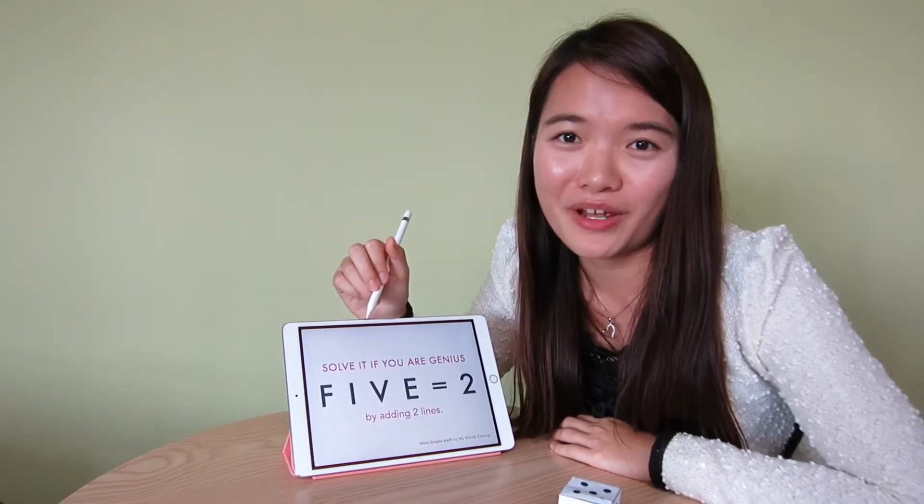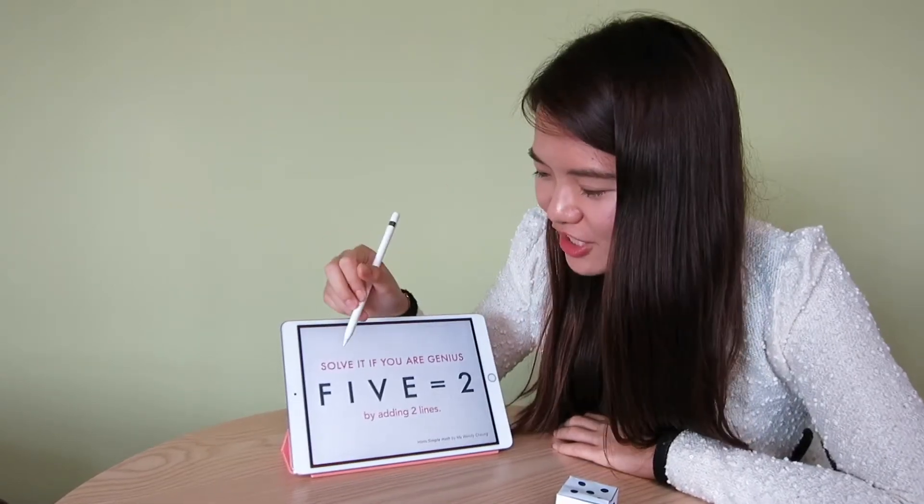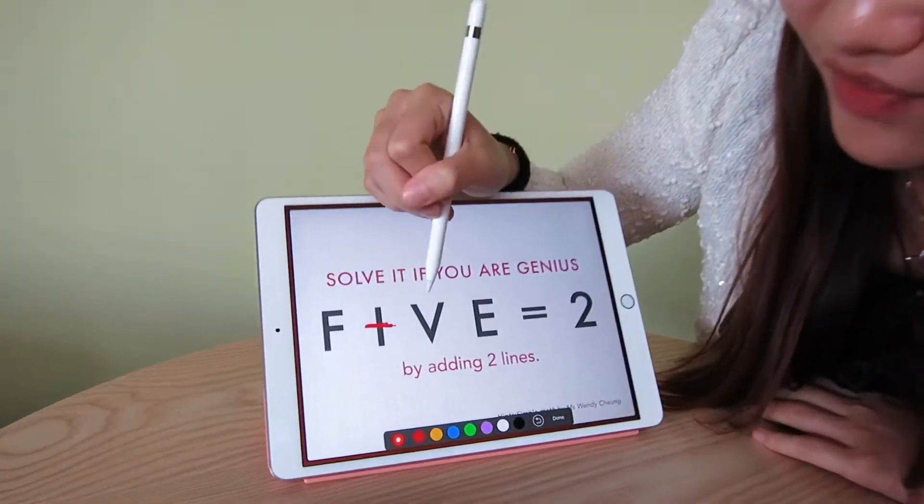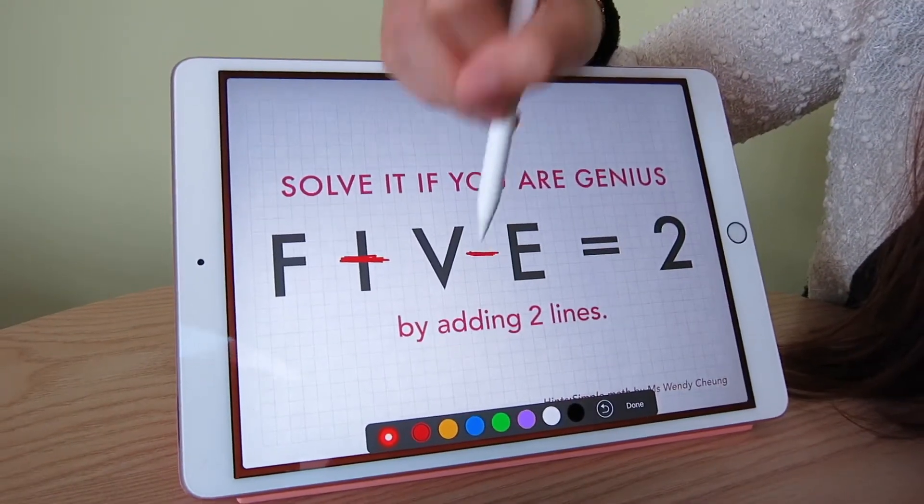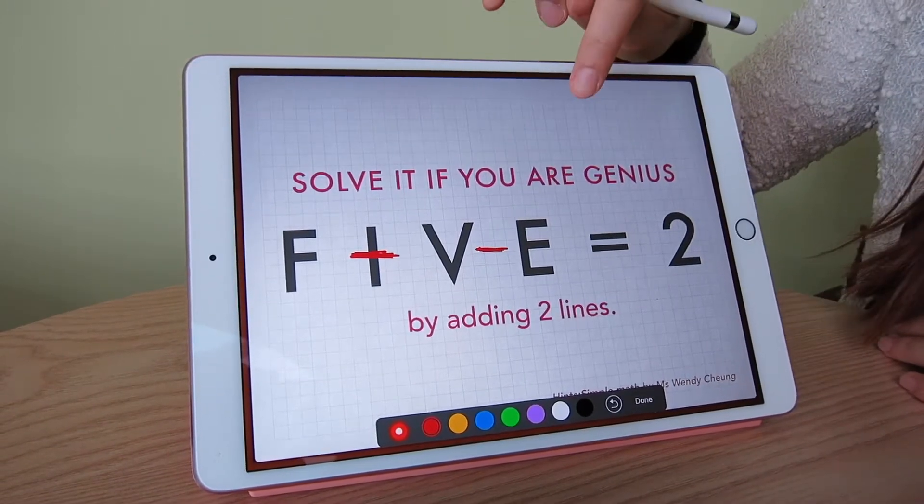Actually, this one is a formula from your S1 knowledge. The simple trick by adding 2 lines—the 2 lines should be plus V and then also minus E—and you will have Euler's formula for your polyhedron.